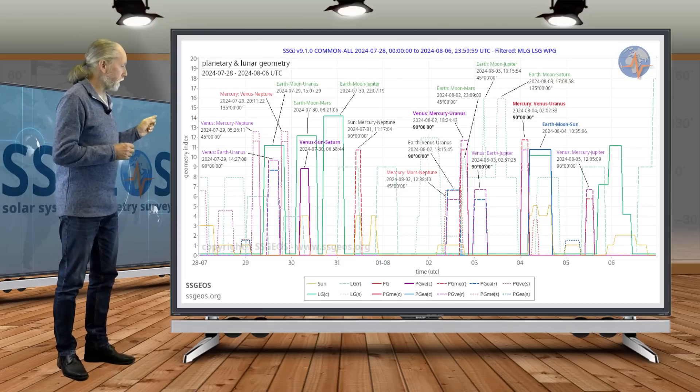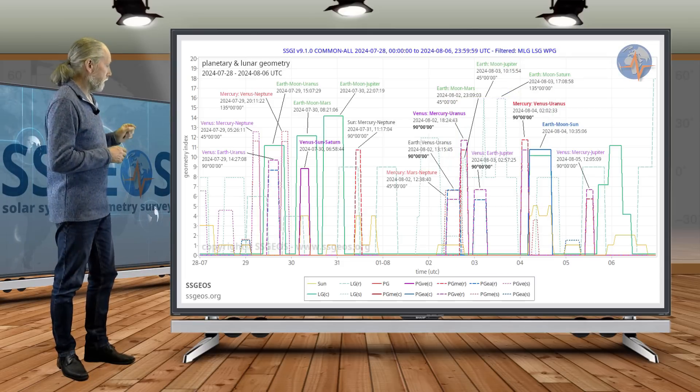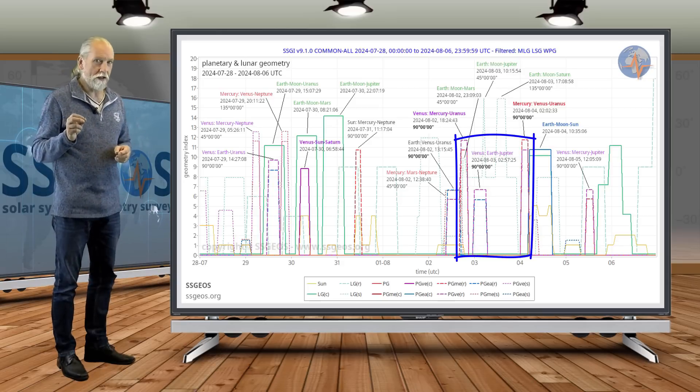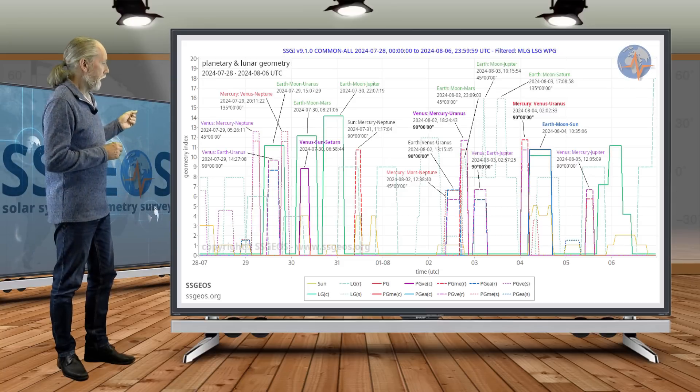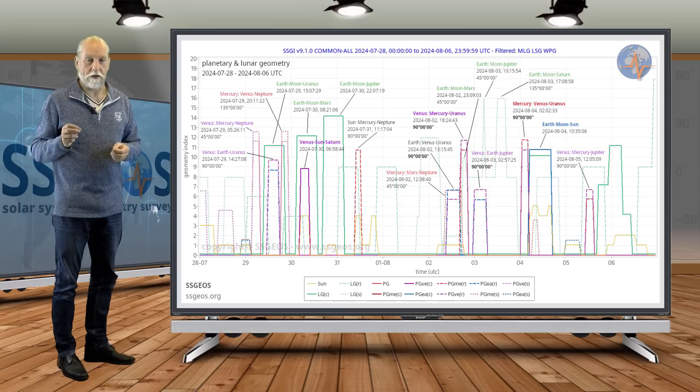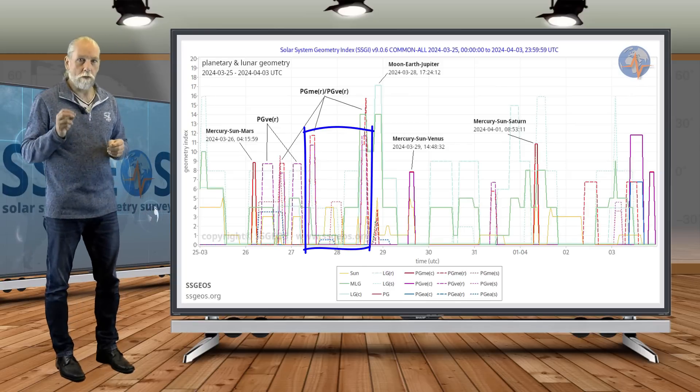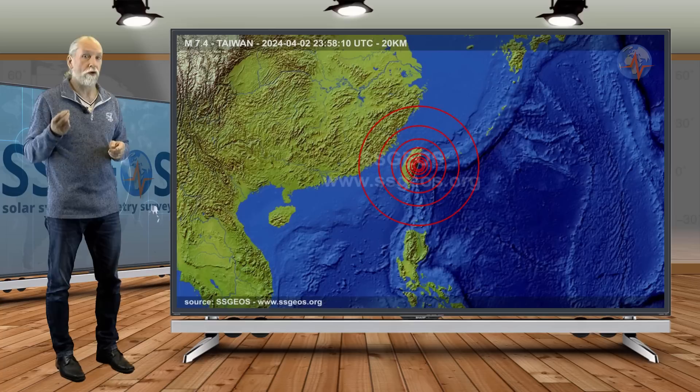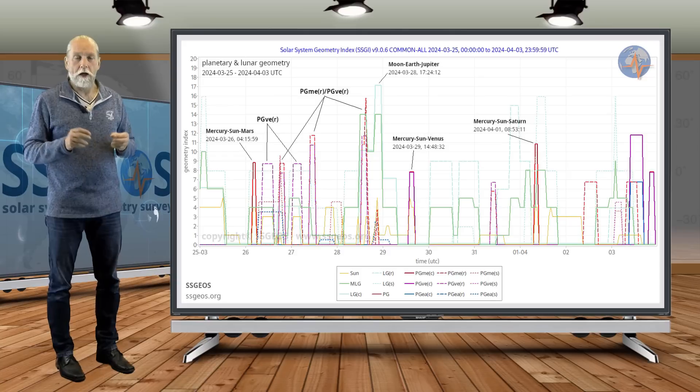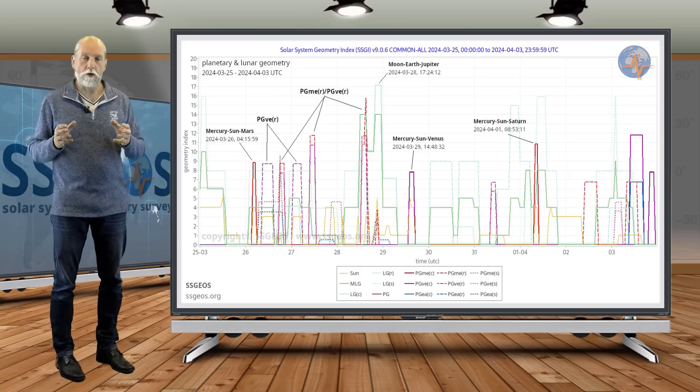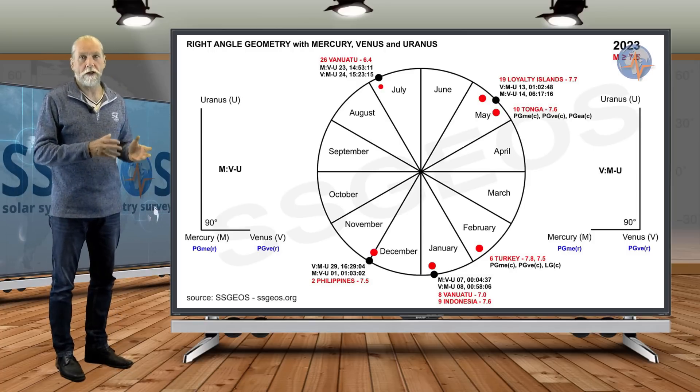We also have critical geometry coming up on the 2nd and 4th of August. That's the typical right-angle geometry I often emphasize between Mercury, Venus, and Uranus - something to keep an eye on because it can produce a mid-7 magnitude earthquake. It doesn't do that all the time. The last time this particular geometry occurred was in late March, and within five days we had the magnitude 7.4 earthquake in Taiwan. You may want to look up the update of March 25th, where I do an in-depth analysis of that geometry and what it did in 2023, because there's an almost one-to-one relationship between that geometry and those large earthquakes.